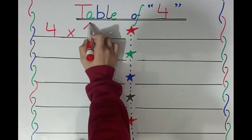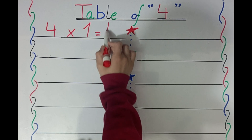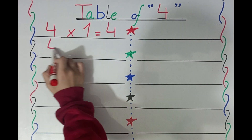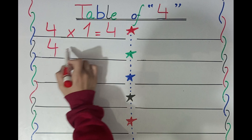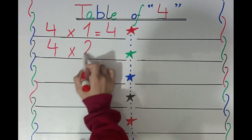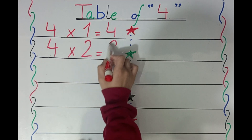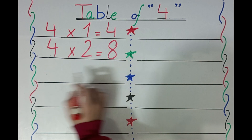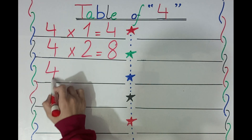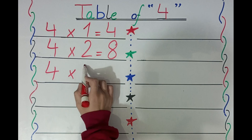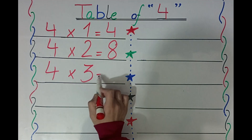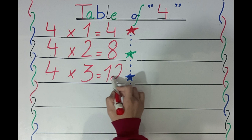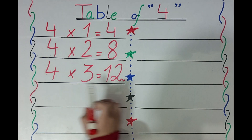Four ones are four. Four twos are eight. Four three's are twelve.